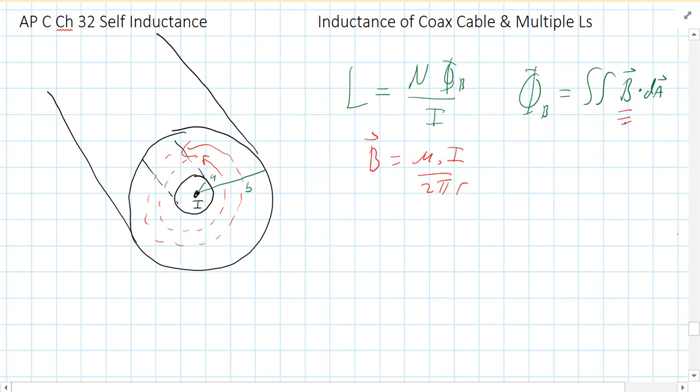What area are we talking about? Well, what we're talking about is an area of a rectangle that would go from the inner to the outer radius and extend all the way through your coax cable. So that cable has to have a length L. It's got to be finite.